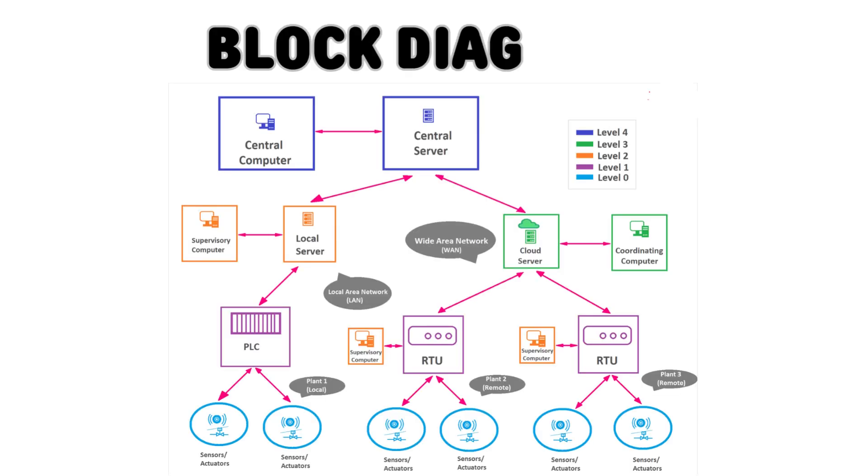This is the block diagram of SCADA system. The block diagram illustrates a basic configuration of a SCADA system, but the actual implementation can vary depending on the specific requirements of the industrial processes and the complexity of the system.